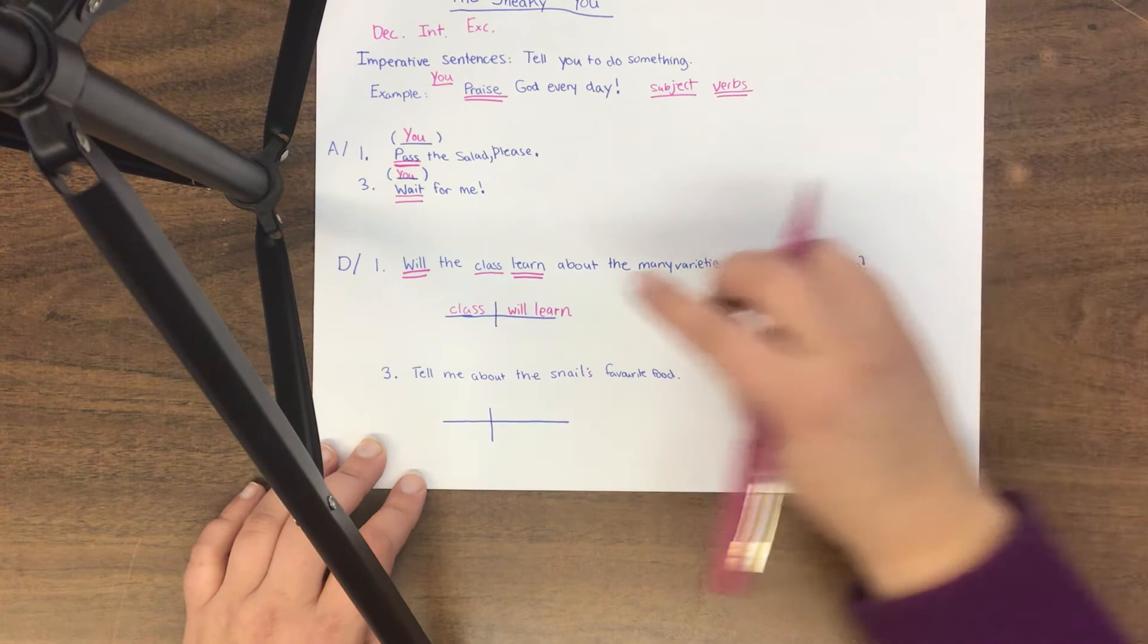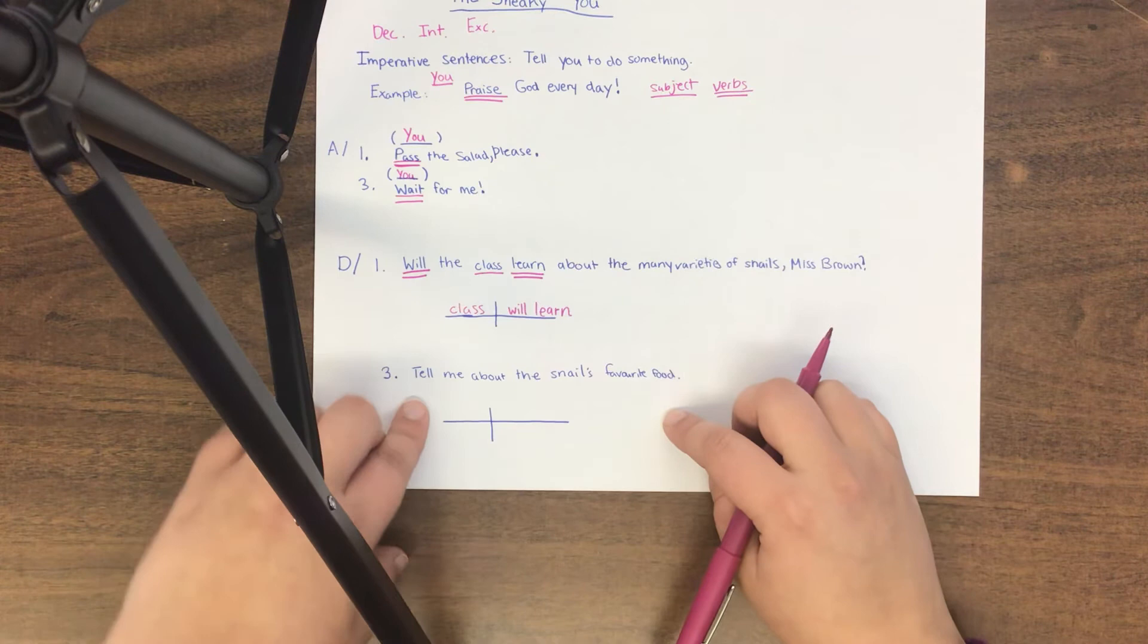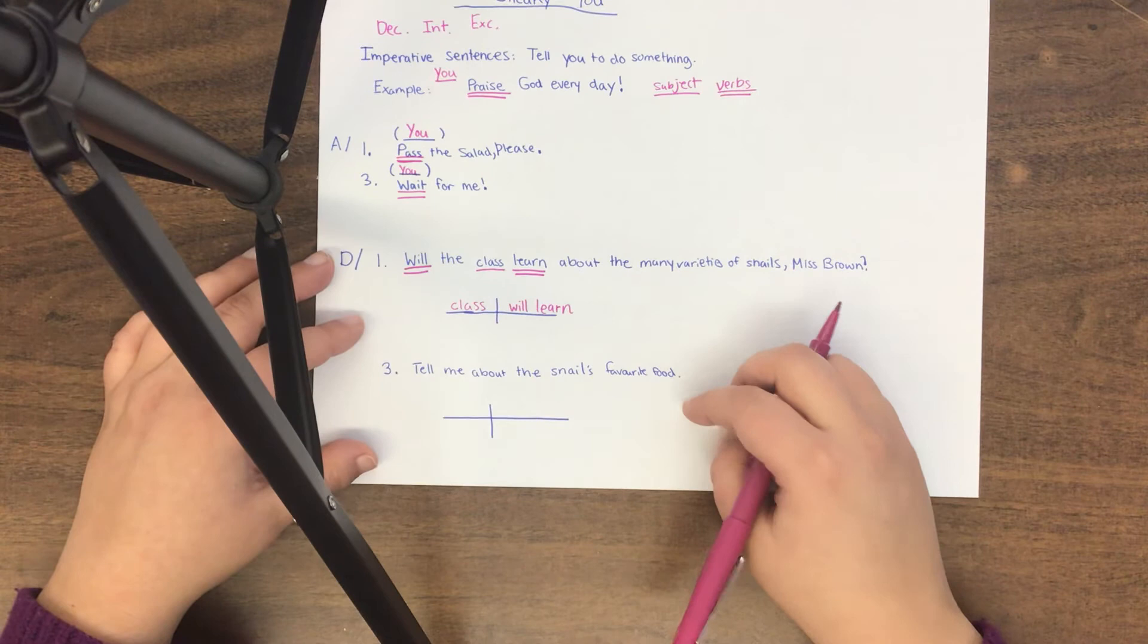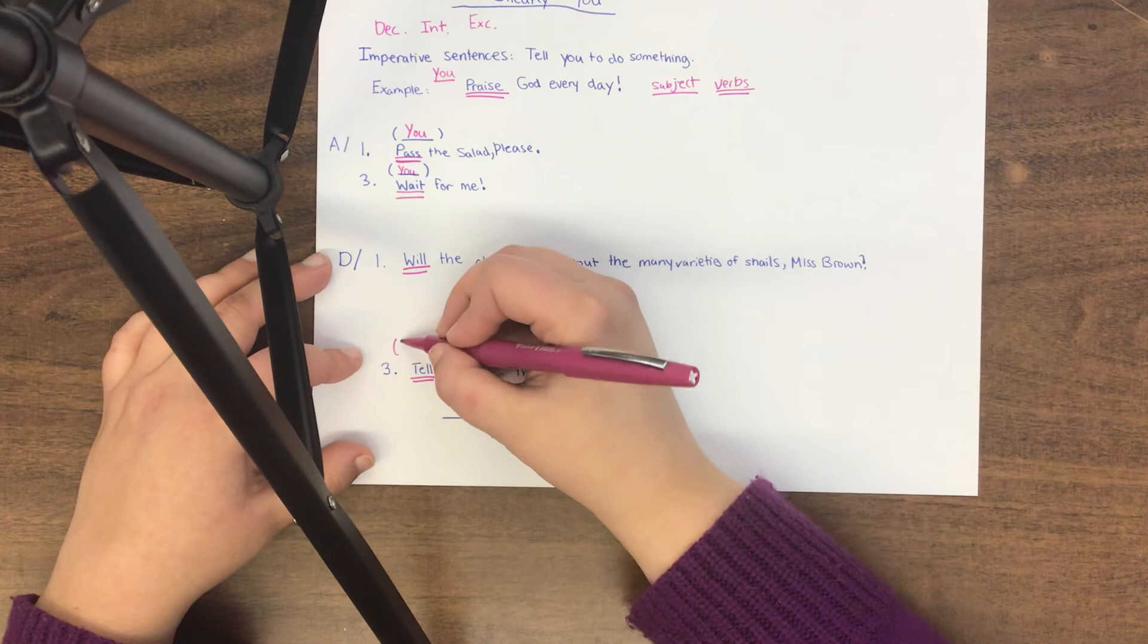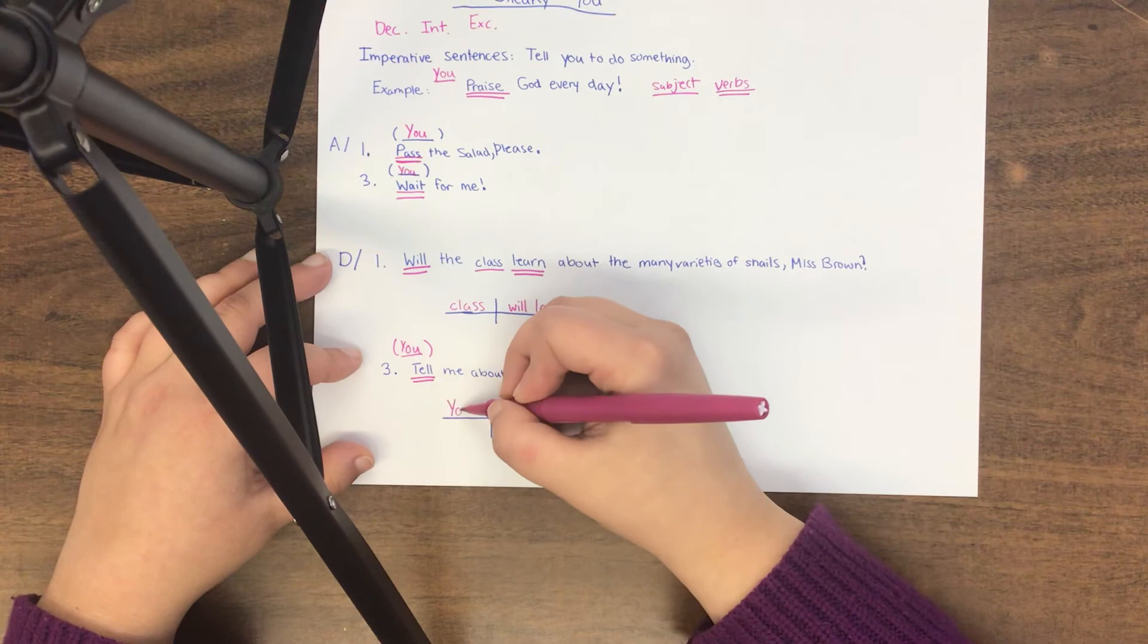That one's a little bit tricky. The other ones won't be that tricky, grade fours. Let's look at number three as proof. Tell me about the snail's favorite food. Well, what's the verb? Tell. Tell is the verb. Who's telling me? Well, it doesn't say. It's an imperative sentence. So that means you are telling me. So my subject becomes you. And that's the one that I diagram.